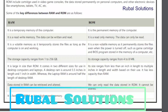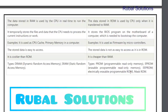RAM: Data stored in RAM can be retrieved and altered. ROM: We can only read the data stored in ROM — it cannot be altered. RAM: RAM is faster than ROM as it is high-speed memory. ROM: ROM is slower than RAM. The data stored in RAM is used by the CPU in real-time to run the computer. The data stored in ROM is used by the CPU only when it is transferred to RAM. RAM temporarily stores the files and data that the CPU needs to process the current instruction or work. ROM stores the BIOS program on the motherboard of the computer which is used to bootstrap the computer.